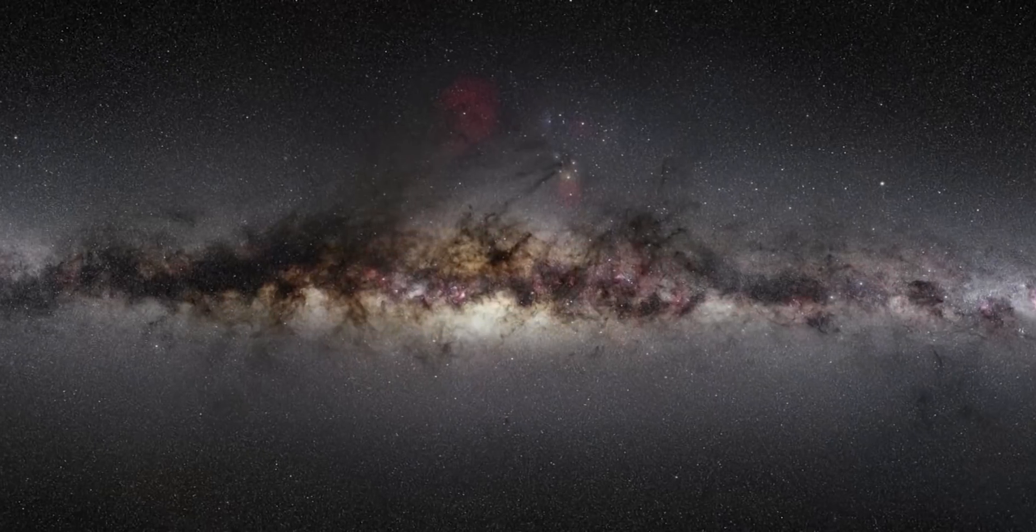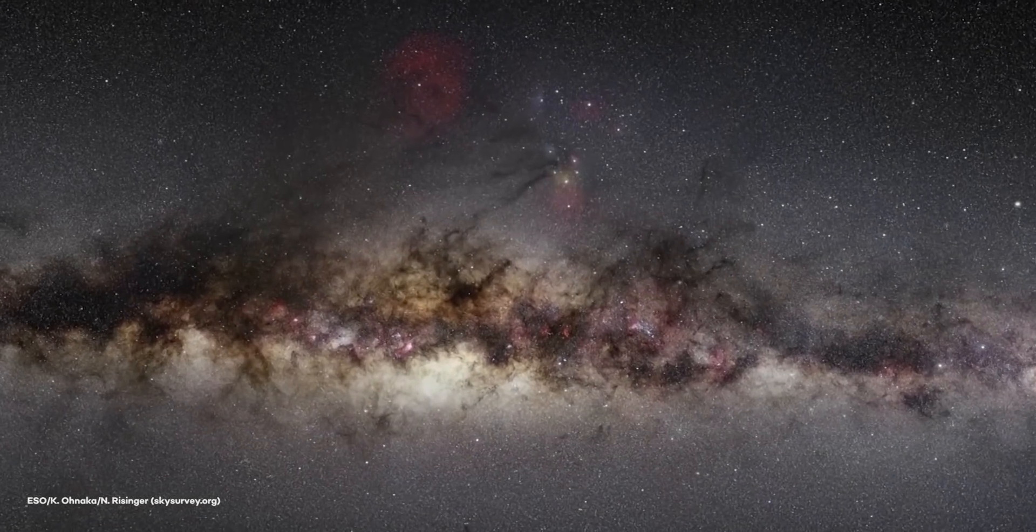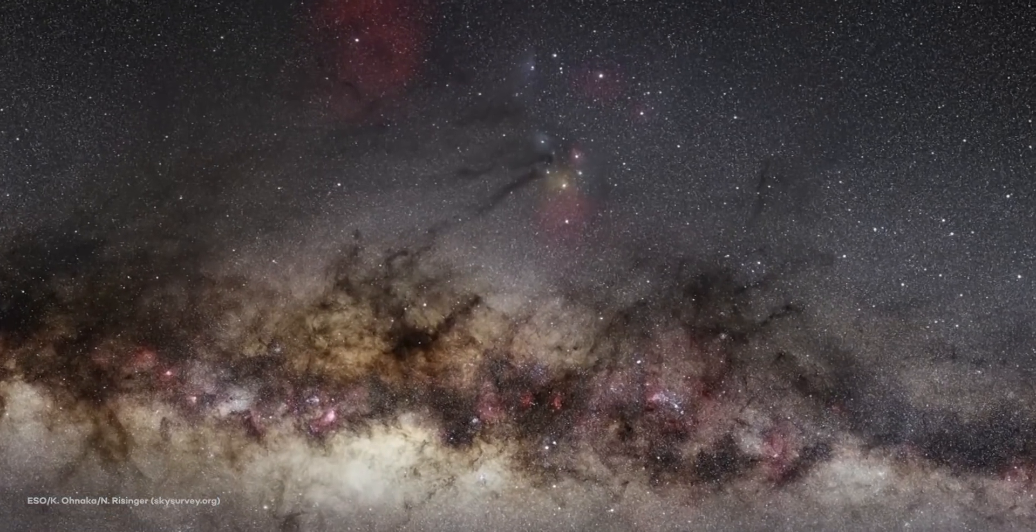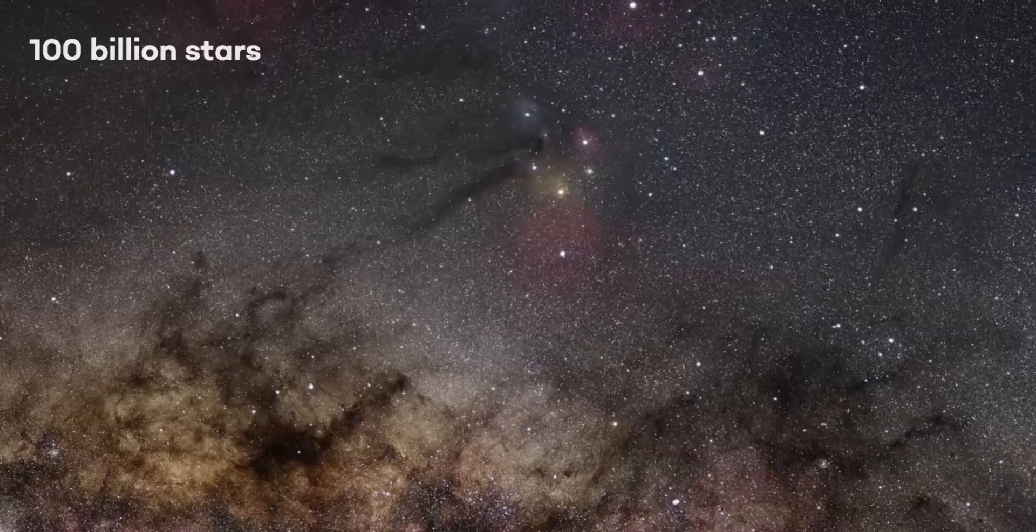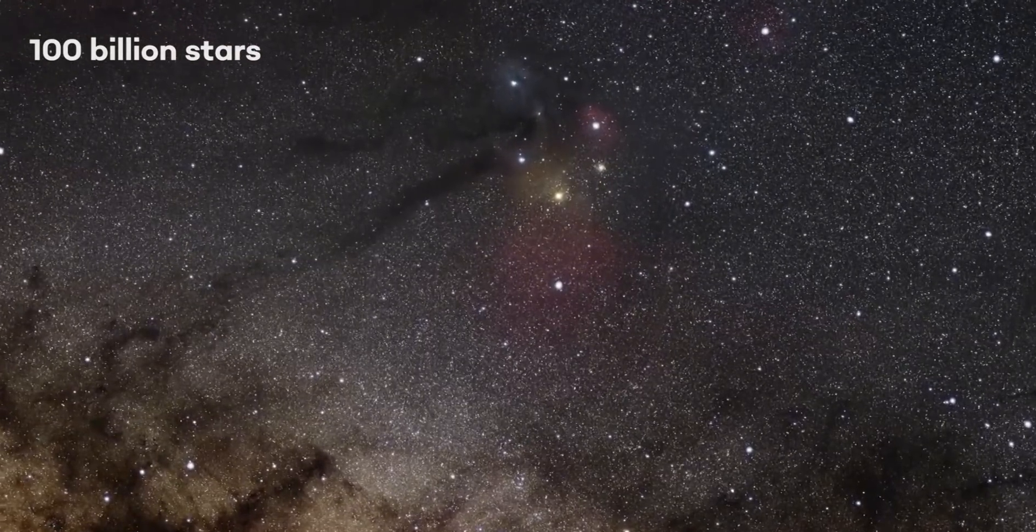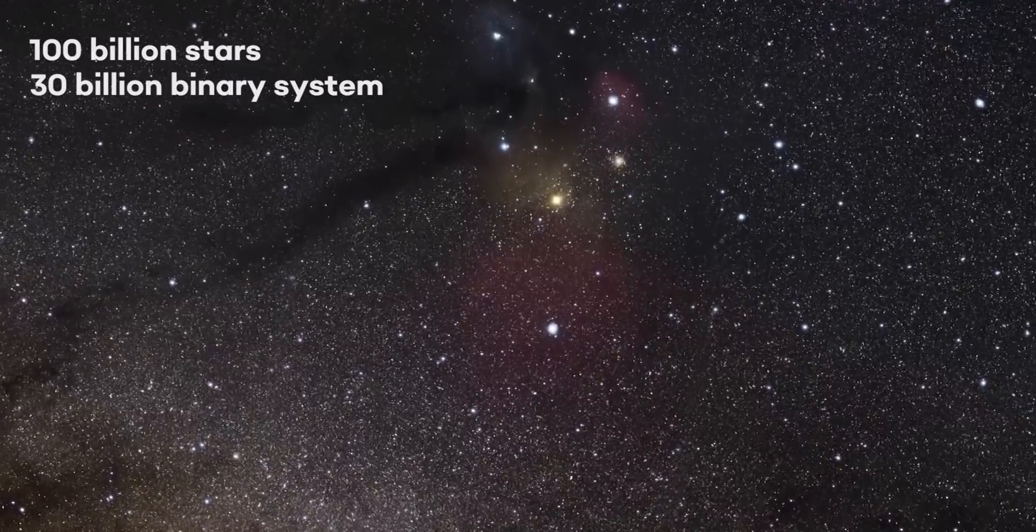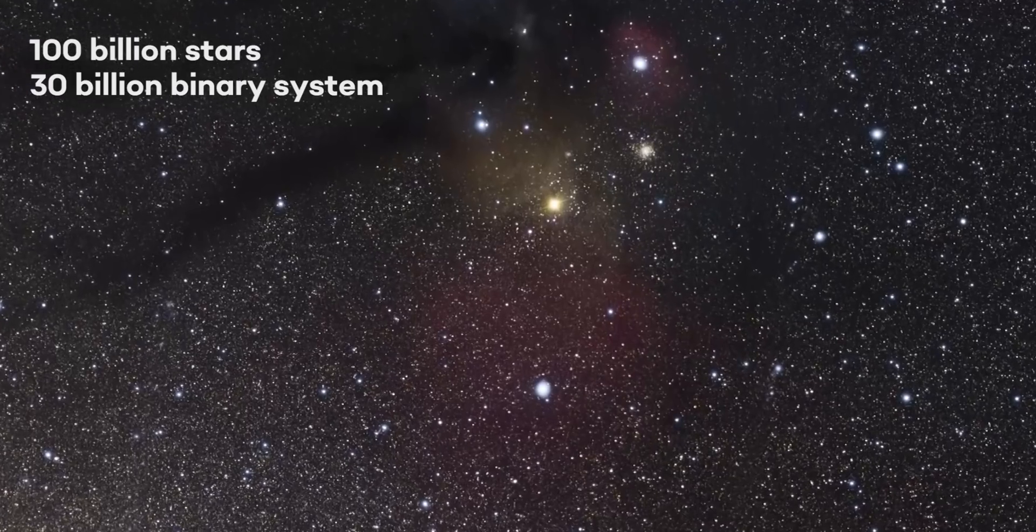Of all the star systems in the Milky Way, about one third of them are bounded in binary or multiple systems. If we take a number of 100 billion stars in the Milky Way, this means there are about 30 billion binary systems waiting to be studied.